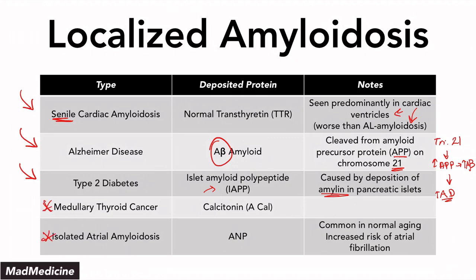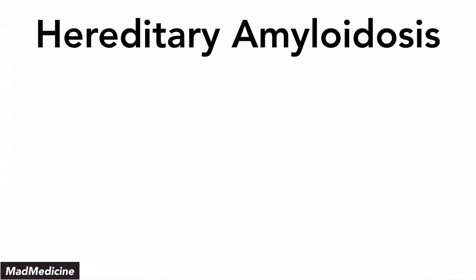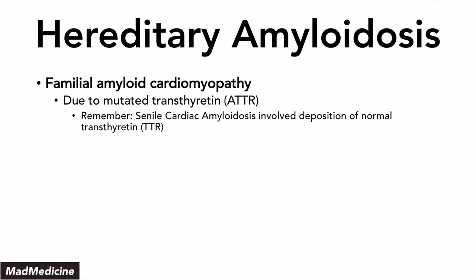For those wanting higher exam scores, also remember medullary thyroid cancer, where you have calcitonin deposition, and isolated atrial amyloidosis, where you have ANP — atrial natriuretic peptide — being deposited. If you see atrial conditions and atrial deposition, consider ANP. These are localized amyloidosis types that are very high yield. Take a photo of the chart and commit it to memory.